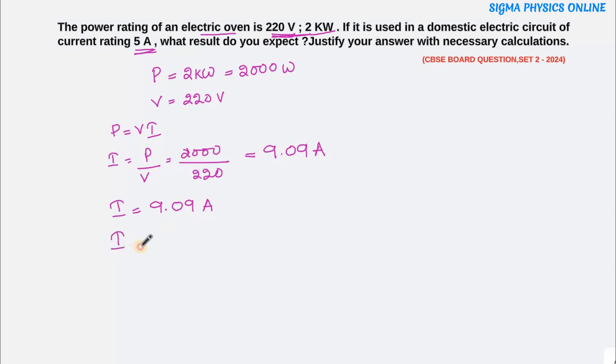So the current drawn by the electric oven is 9.09 ampere, whereas the current rating of the circuit is only 5 ampere. From this we see that the current drawn by the electric oven exceeds the safe limit of the circuit which is 5 ampere. Hence, the fuse element of the electric fuse will melt thus breaking the circuit.